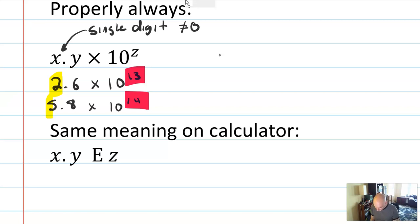So, here are some things that are not in scientific notation. 33.2 times 10 to the 4th. Nope, because 33 is not a single digit.